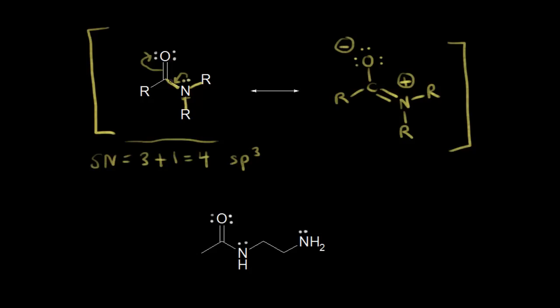Let's follow those electrons. The electrons in magenta — the lone pair — moved in to form our pi bond. The pi electrons in blue came off onto the oxygen to give it a negative one formal charge. Now let's calculate a steric number for this nitrogen in our second resonance structure. The steric number equals the number of sigma bonds.